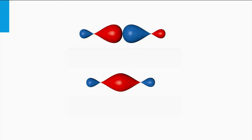Here you see two sp3 orbitals of two neighboring atoms, which are at a far distance from each other. Both orbitals have one electron at a discrete energy level that resembles that of the sp3 hybrid. To establish a bond, the two atoms have to approach each other. The orbitals start to overlap and merge into one molecular orbital with its own shape.